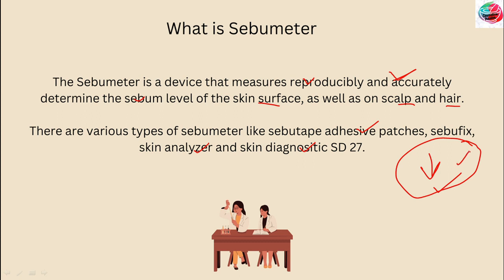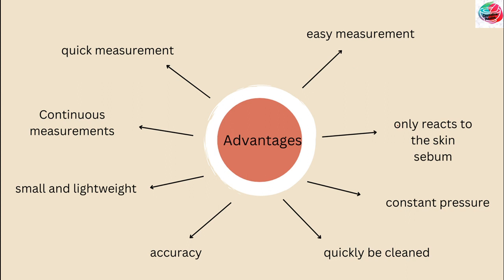What makes us consider the sebumeter so highly? Its advantages include: the special tape only reacts to skin sebum independent of water content; it allows fairly quick and easy measurements to avoid occlusion; a zero calibration before each measurement provides highest accuracy; the probe is small and lightweight for easy handling and measurement on all body sites; the spring in the head of the cartridge ensures constant pressure on the skin enabling exact reproducible measurements; and the accuracy of the device can easily be checked at any time with a specific calibration tool. It is worldwide established as sebummetry with a broad range of studies.